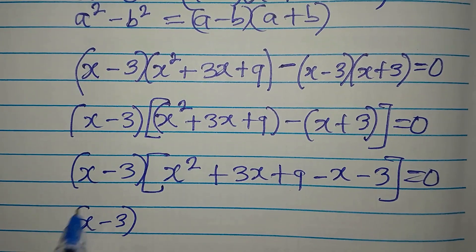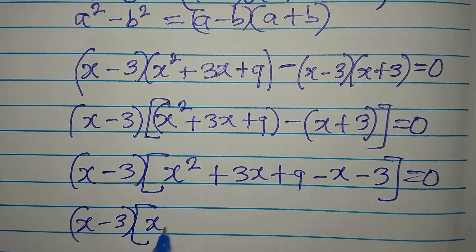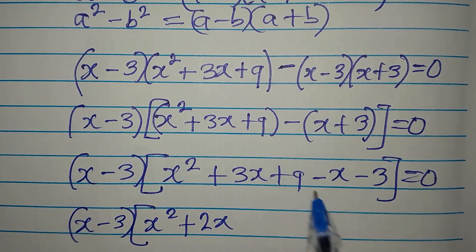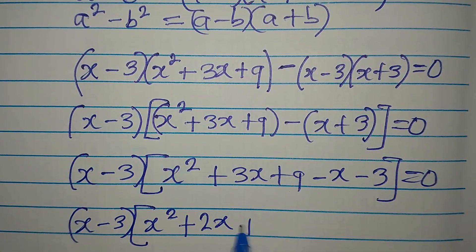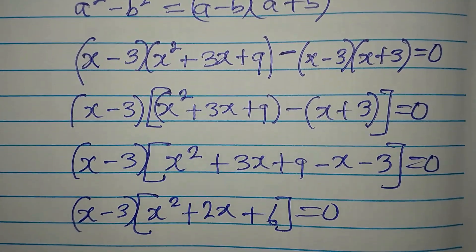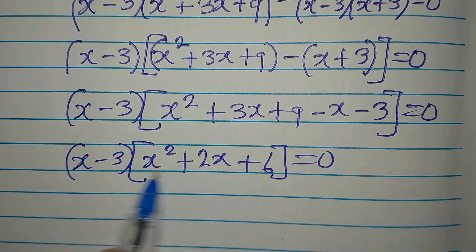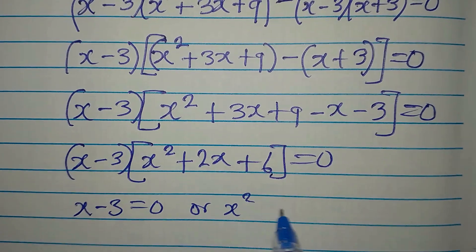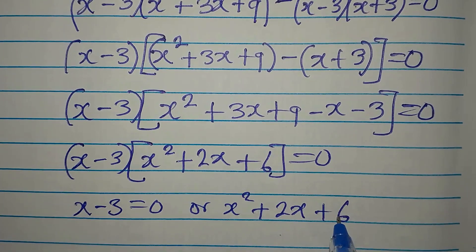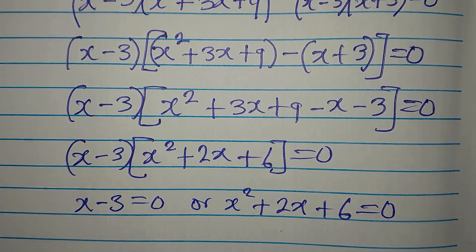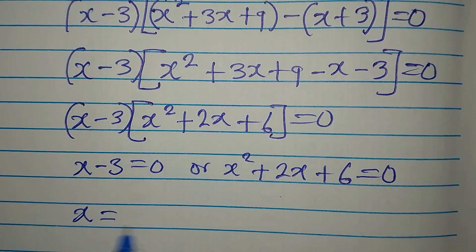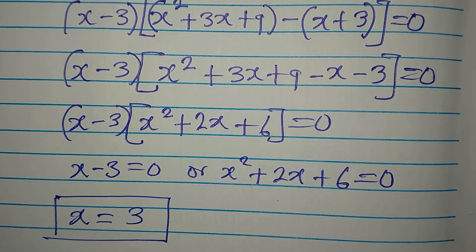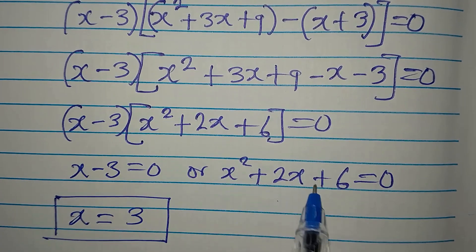Simplifying inside: 3x minus x gives plus 2x, and 9 minus 3 gives plus 6. So we have x minus 3 times x squared plus 2x plus 6 equals zero. Setting each factor to zero: x minus 3 equals zero gives x equal to 3. That is the first solution. Now let's solve the quadratic equation x squared plus 2x plus 6 equals zero.